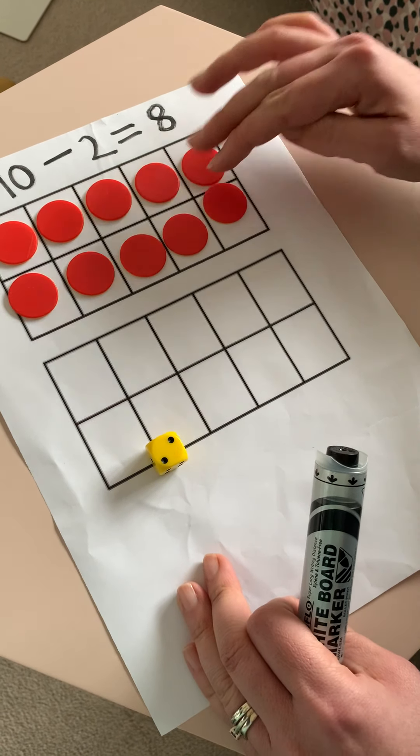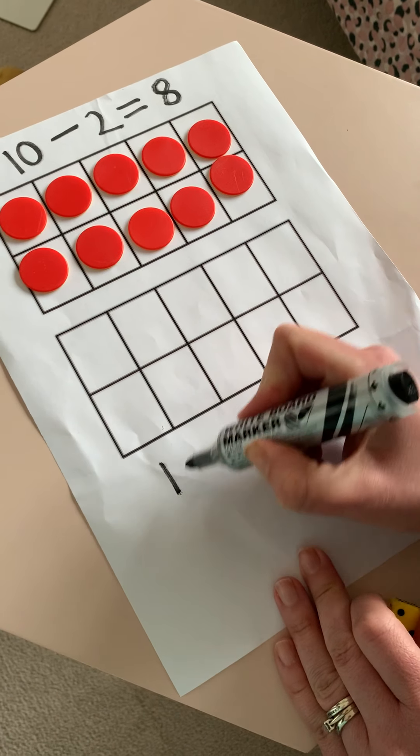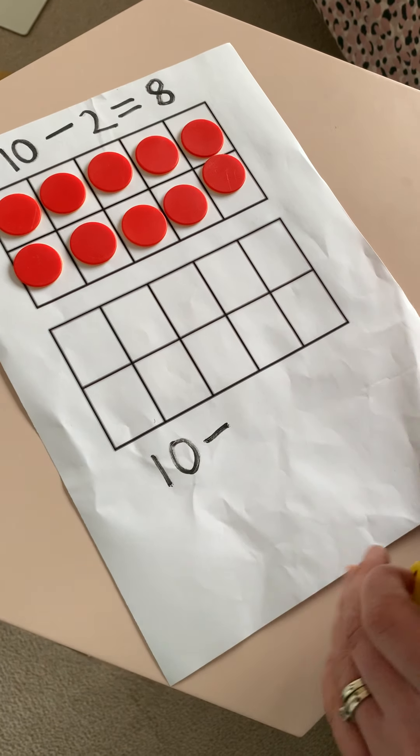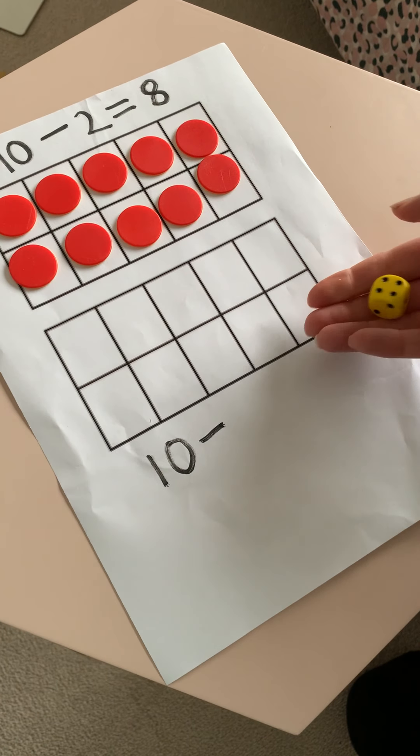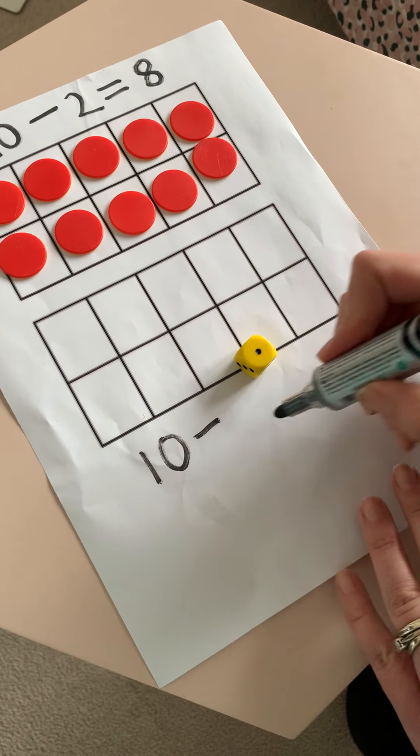So we're going to start again with our 10s frame. And this time we're going to start with 10. And let's see how many we're going to take away when we roll our die. Oh, that's nice and easy. I'm only taking away 1.